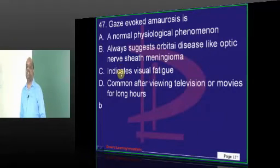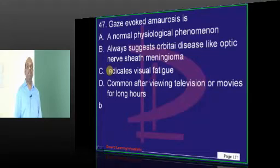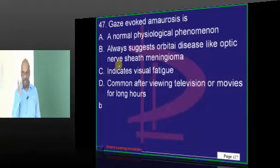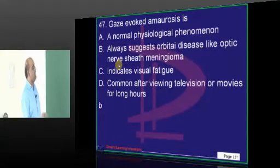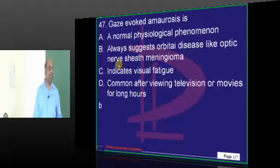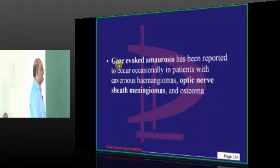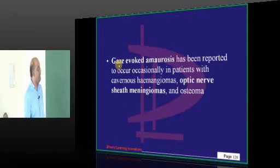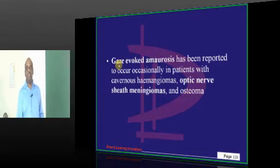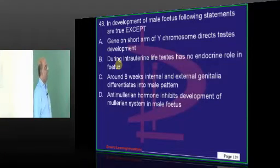Gaze-evoked amaurosis is a blindness which appears when you move your eyeball in a particular direction of gaze. It is a typical feature of optic nerve sheath meningiomas. Cavernous hemangiomas and osteomas also classically present with gaze-evoked amaurosis.